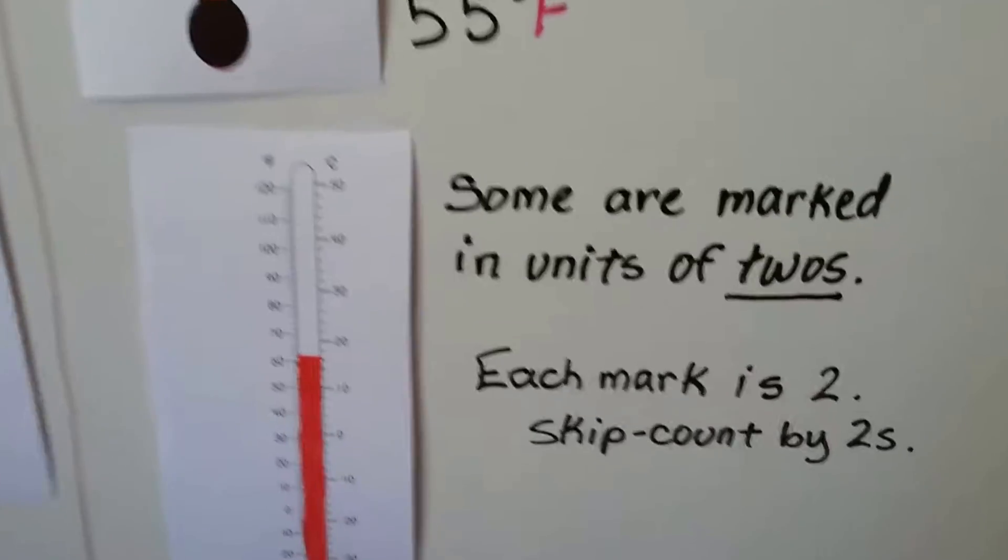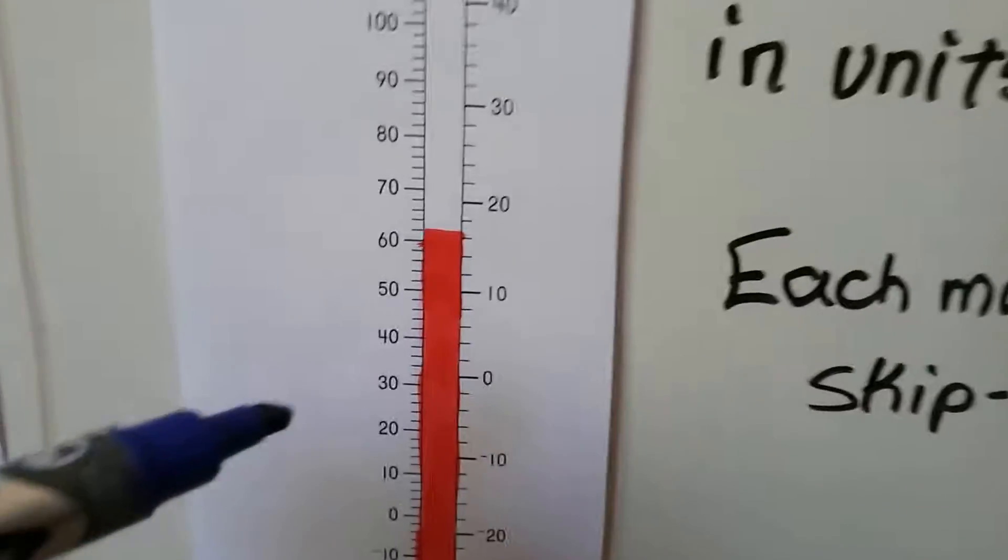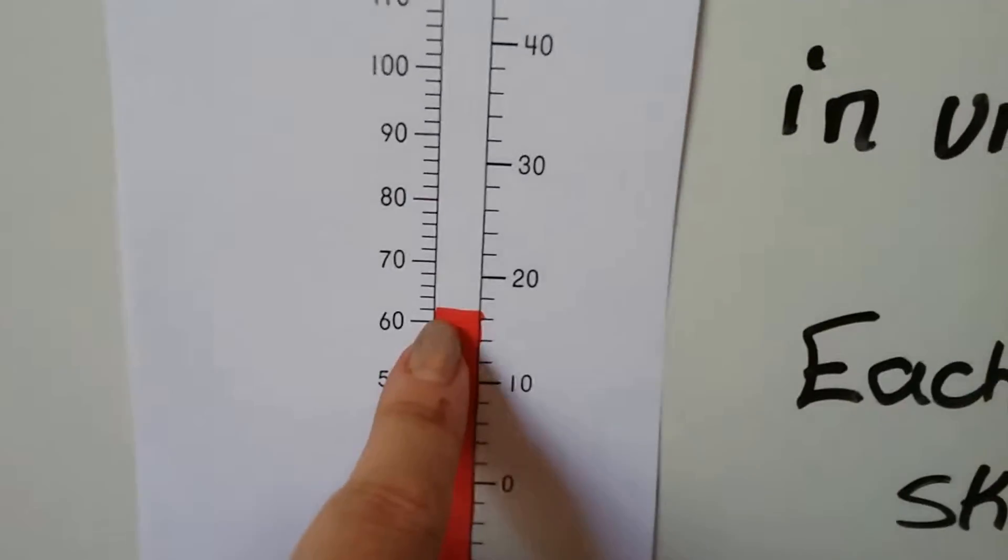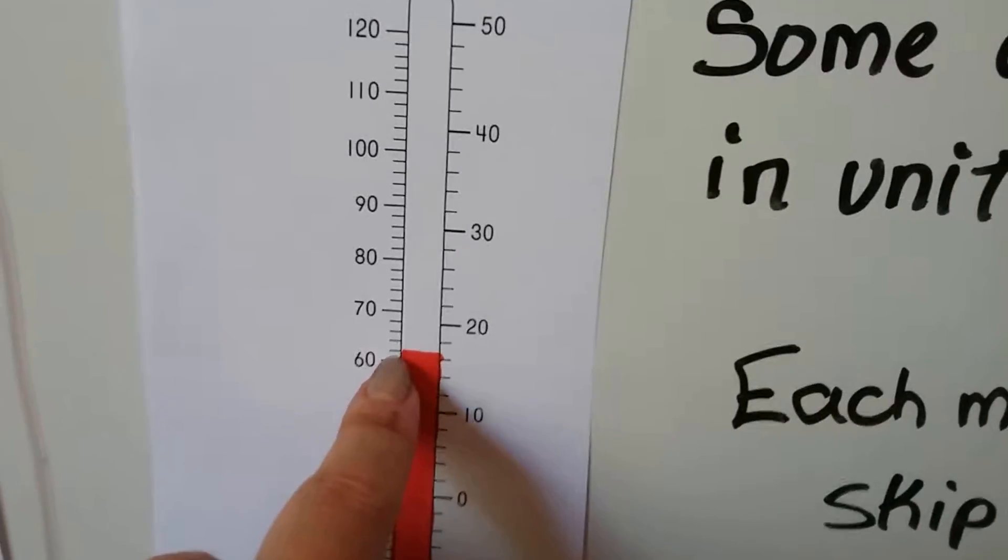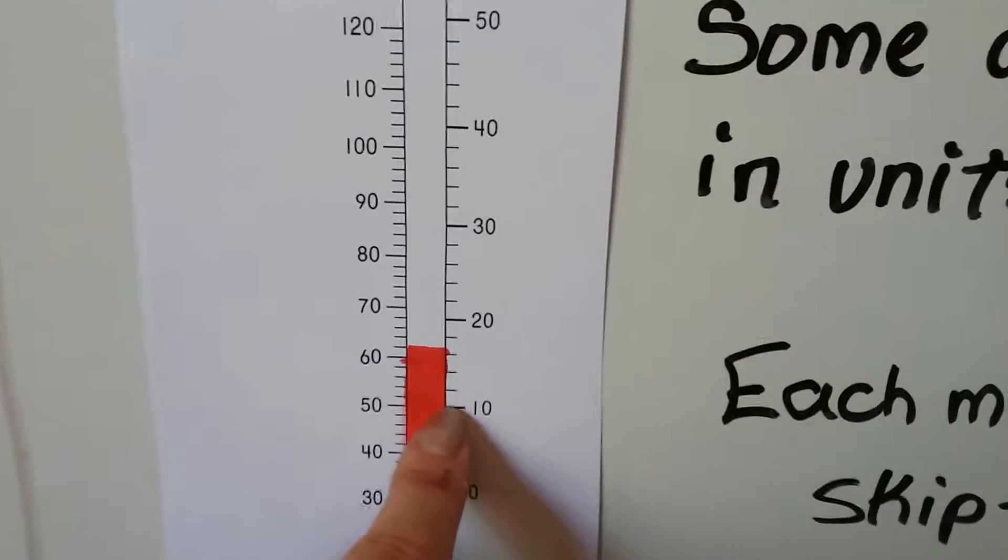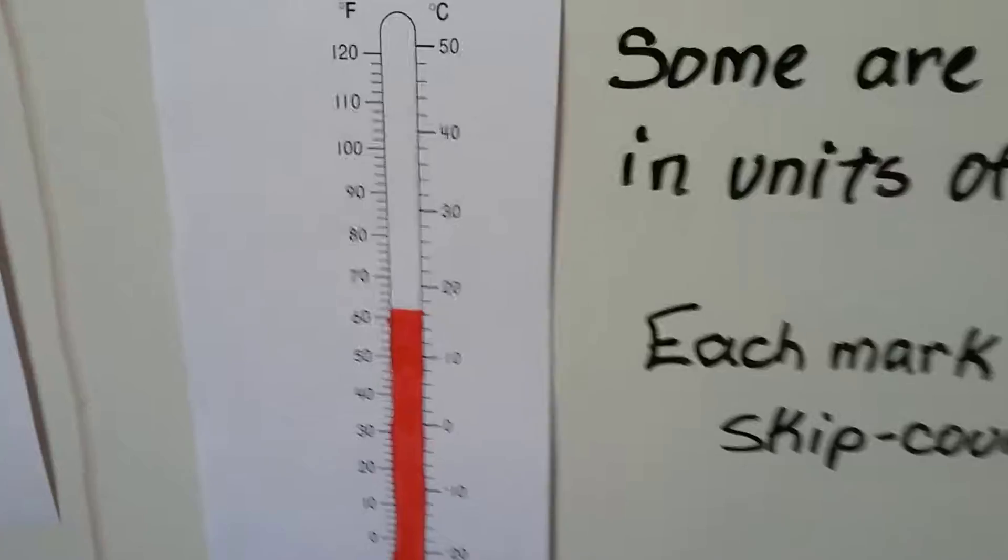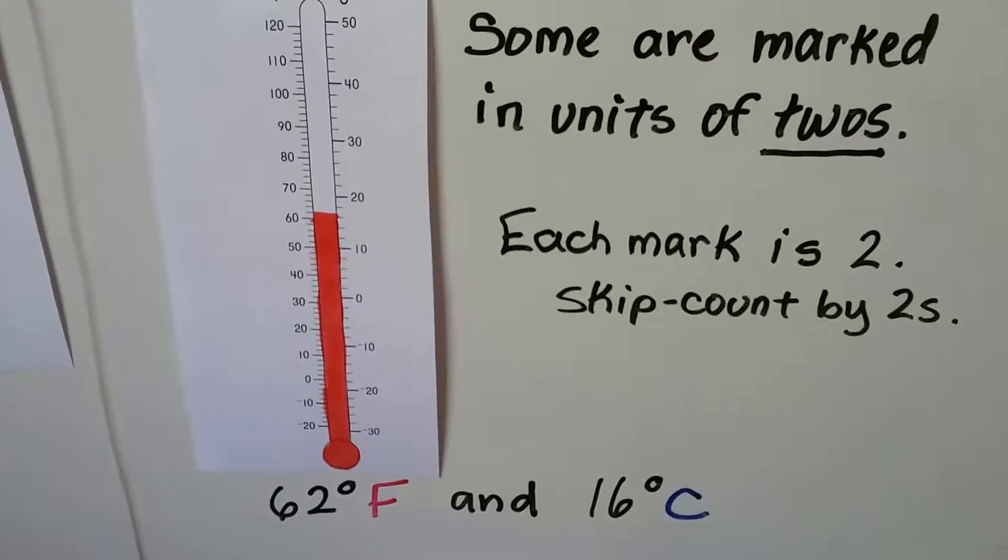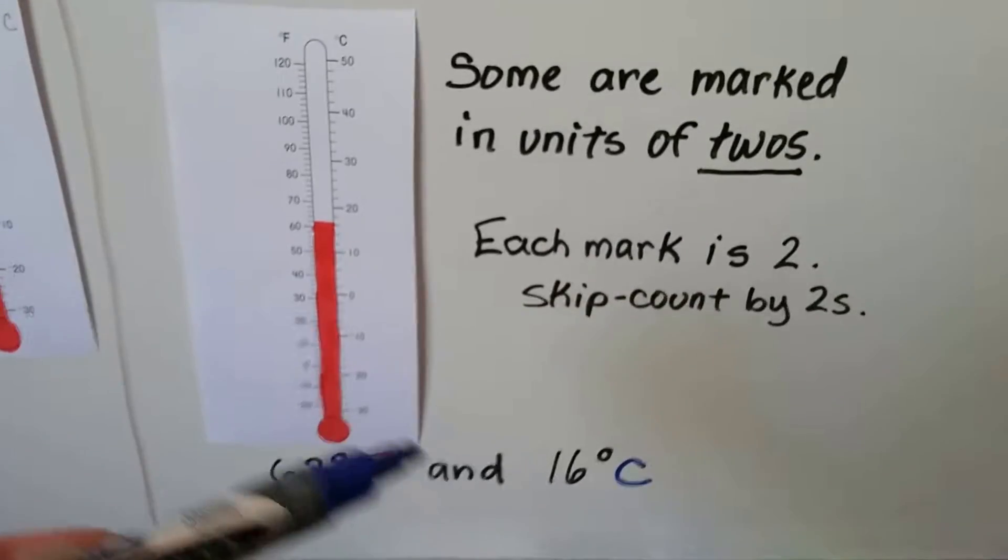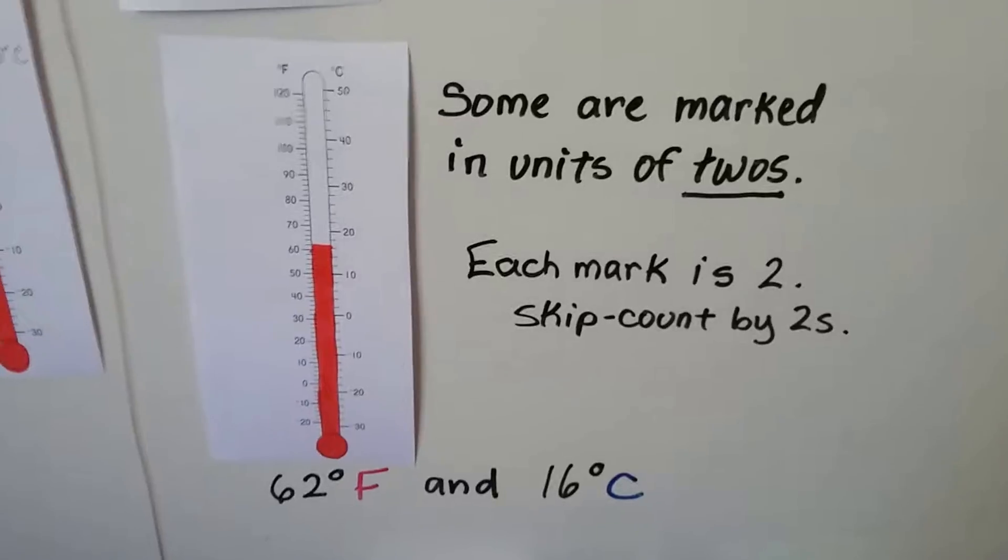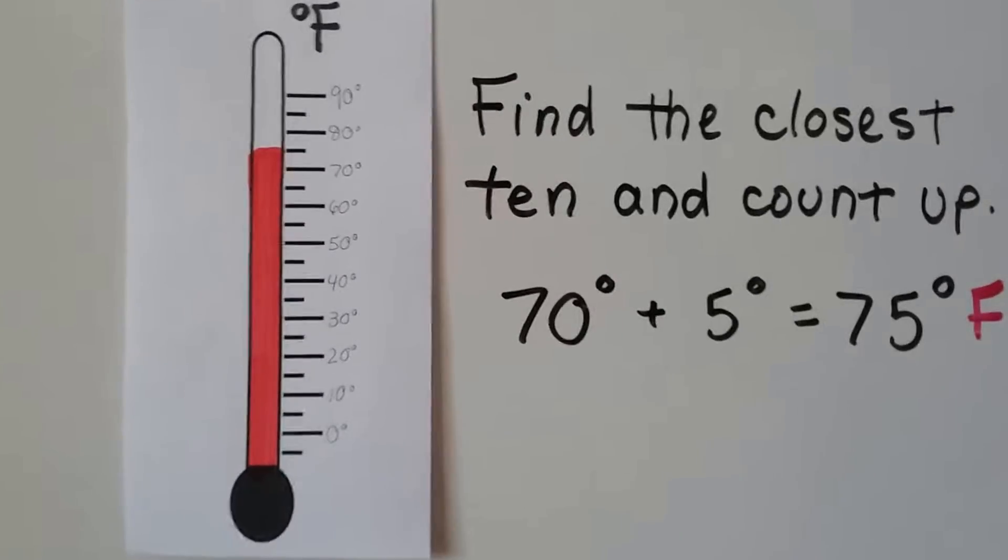Well, some are marked in units of twos. Each mark is a 2, and you skip count by twos. So if you look at this one, here's the 60 Fahrenheit, and it went up one little mark. So that's 62, because on this thermometer, each little mark is a 2. Over here, we're at 10, and two more is 12, and two more is 14, and two more is 16. See? 10, 12, 14, 16. So this would be 62 degrees Fahrenheit and 16 degrees Celsius.